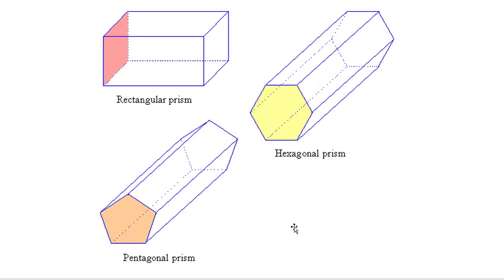We name our prisms by the type of base we have. If our base is a rectangle, it's a rectangular prism. If our base is a pentagon, it's a pentagonal prism. If it's a hexagon, it's a hexagonal prism. If it's a square, it's a square prism. Well, a square prism is basically a cube, but we name it by what type of shape our base is.